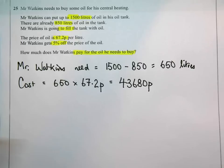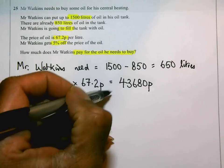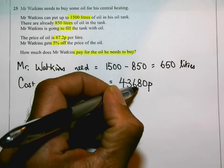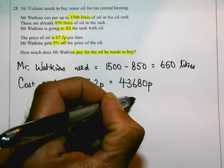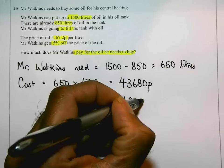But, if that's in pence, how much is it in pounds? Well, divided by 100, that's going to give me 436 pounds 80 pence.